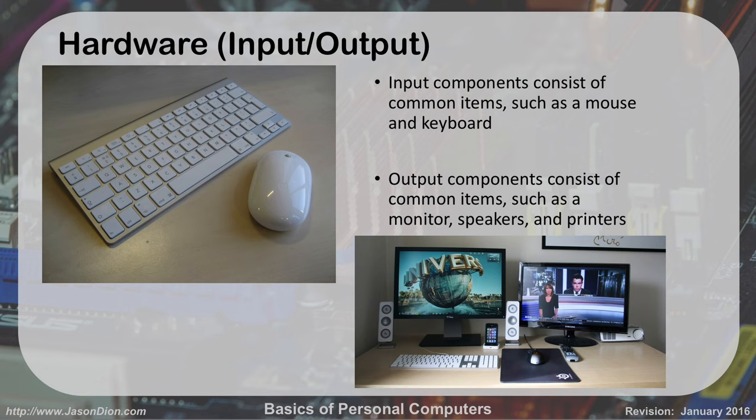We have input and output hardware as well. Input things include mice and keyboards — and nowadays even your monitor with touchscreens. Output can be things like monitors, speakers, or printers. Monitors to see it, printers to have a physical output. Even 3D printers now — you can print out little 3D objects like game pieces. And speakers to give you that audible output as well.